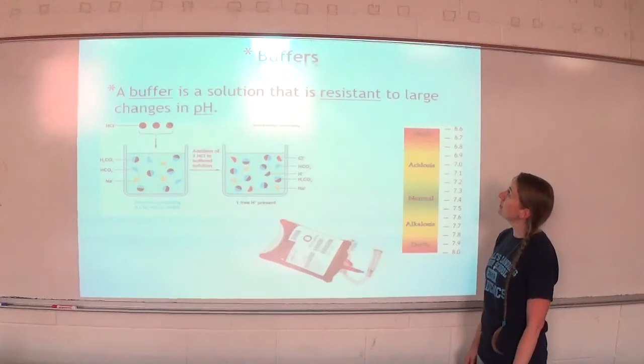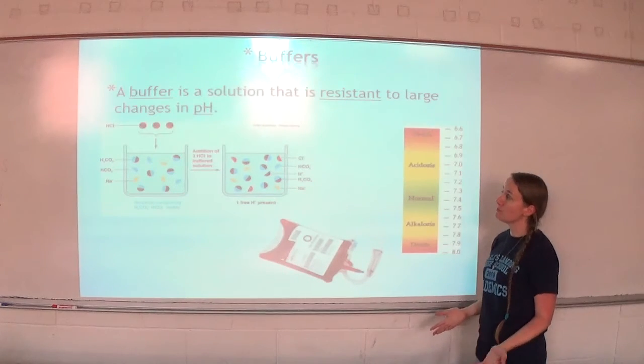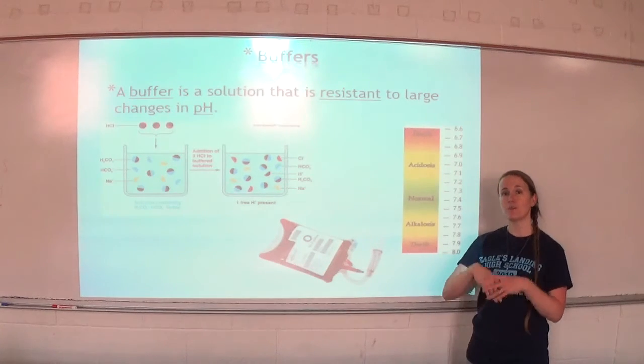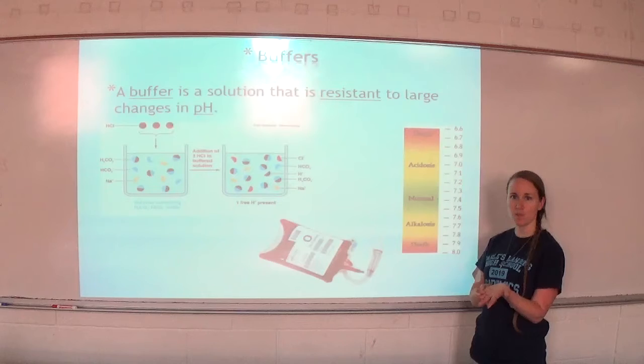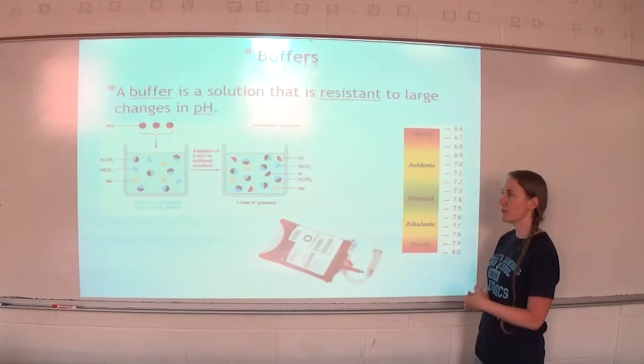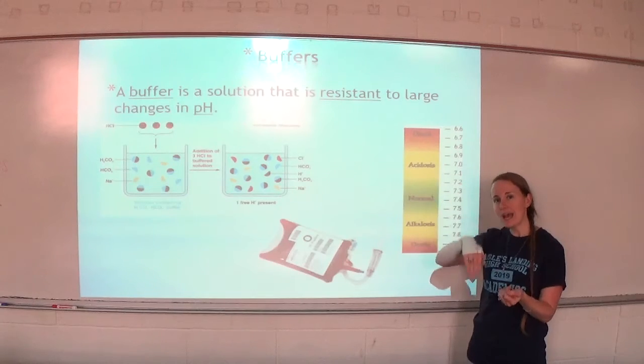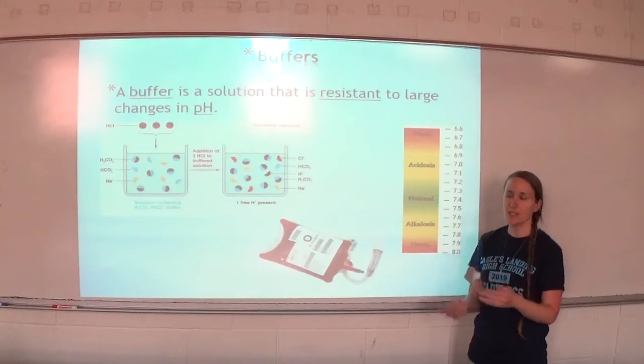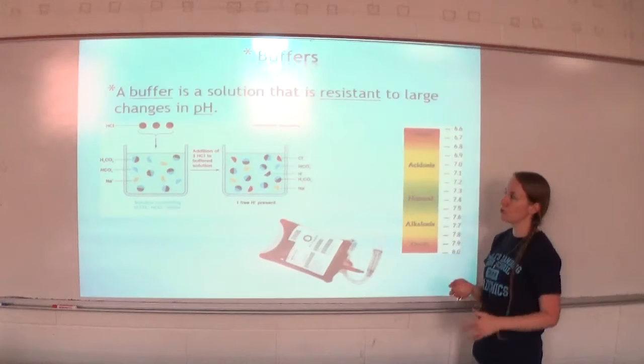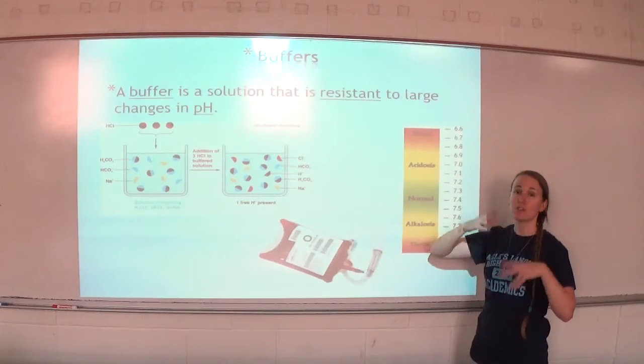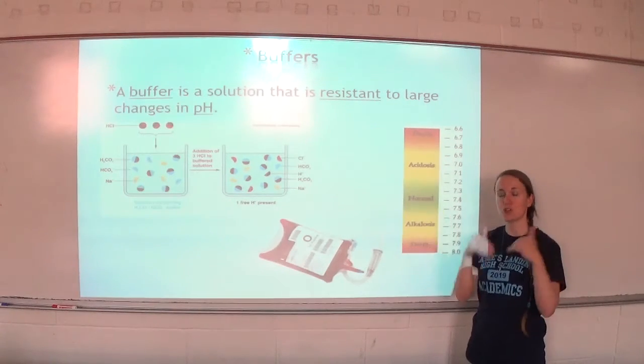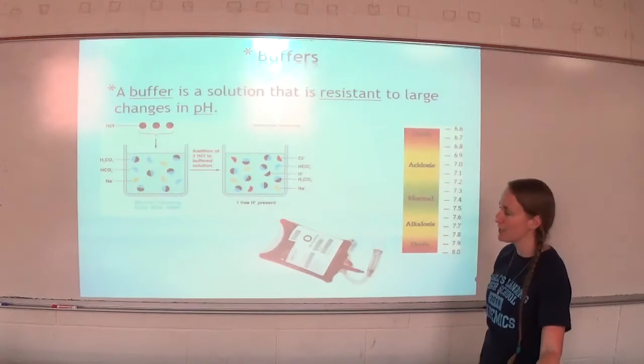A buffer is a solution that is resistant to large changes in pH. Buffers are made from a weak acid and its conjugate base. You don't really need to know what that is right now, but it has an acid and a base portion. If you add more acid, the base will neutralize it. If you add more base, the acid part will neutralize it. That's how the buffer keeps from changing pH, as it tries to neutralize anything that you add to it.